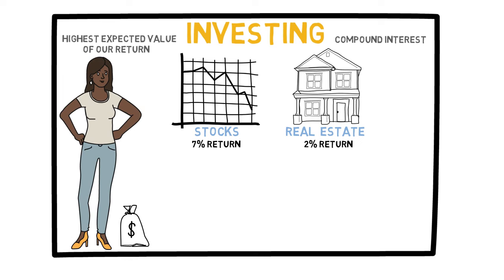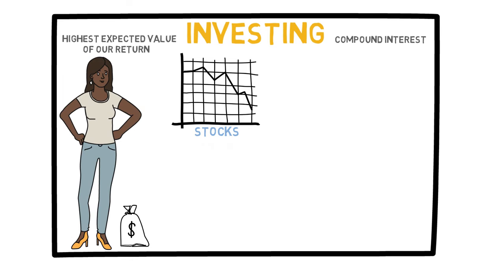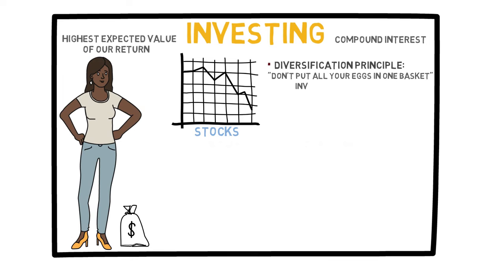Suppose I choose to invest in stocks — I should also take advantage of the diversification principle, which is very closely related to the law of large numbers. This principle is essentially the well-known saying: don't put all your eggs in one basket. In order to reduce your risk, it is smart to invest in multiple stocks rather than just one. If one stock collapses you have not lost all of your money. Remember the coin toss model for stocks discussed previously — if you are diversifying by investing in many stocks, you are basically investing in more coin tosses from different coins, so you are taking more advantage of the law of large numbers.